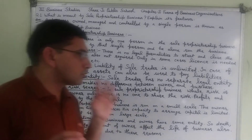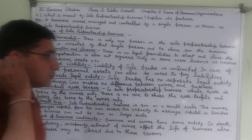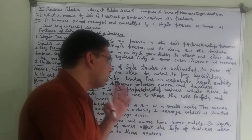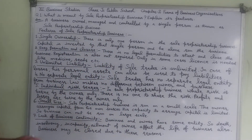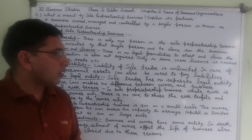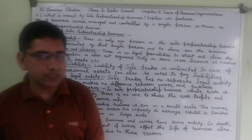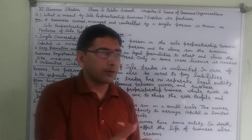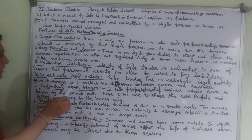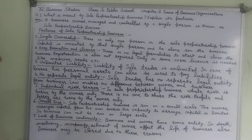Next feature is no separate entity. The sole trader and business have the same entity — there is no separate legal entity. Owner and business have the same entity. Business law makes no difference between the owner and the business. Owner will be responsible for dealings of the business, and the business will also be responsible for the dealings of the owner. There is no separation between owner and business.